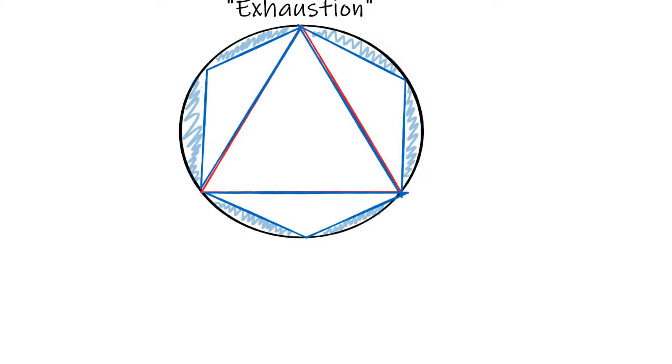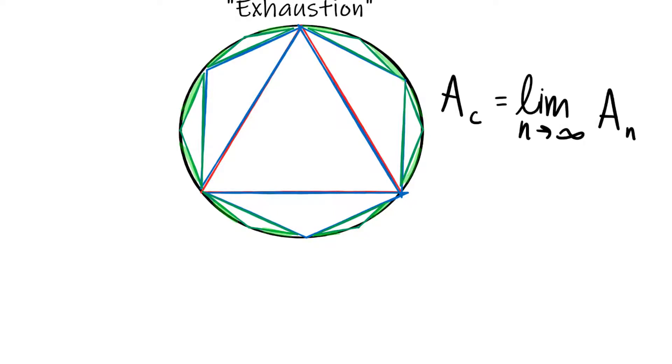The area of the circle is approximately equal to the area of the inscribed polygon as the number of sides increases, and the area of the circle is equal to the area of the polygon with an infinite number of sides.